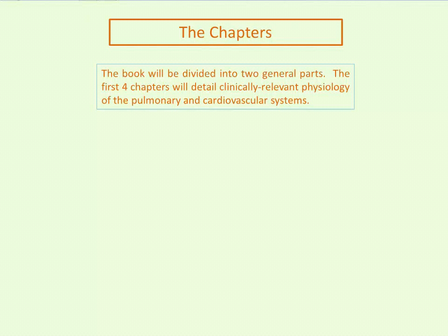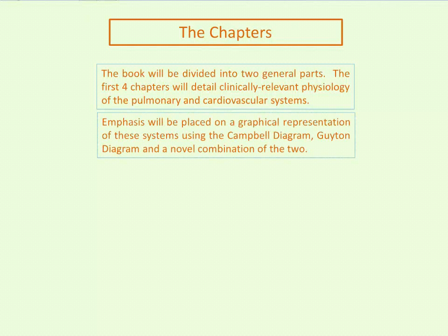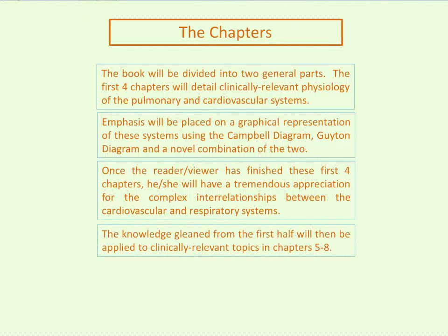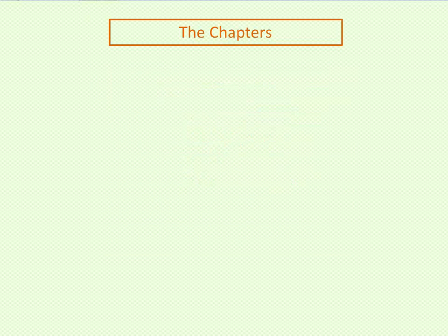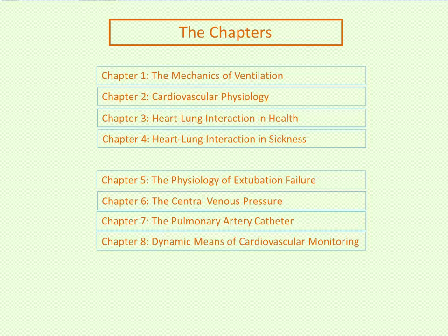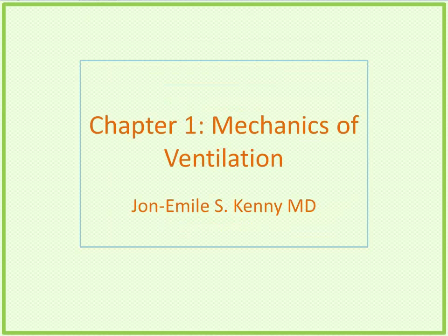The book and lecture series will be divided into two general parts. The first four chapters will be clinically relevant physiology, with an emphasis placed on graphical representation of these systems: the Campbell diagram pertaining to the pulmonary system and the Guyton diagram pertaining to the cardiovascular system, and then a novel combination of the two which helps really integrate heart-lung interaction in a meaningful way. After the first four chapters, chapters five through eight will be dedicated to more clinically relevant topics. Here are some highlights of chapters one through four.